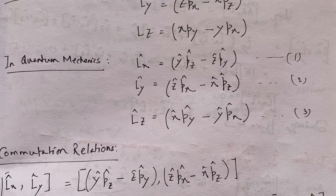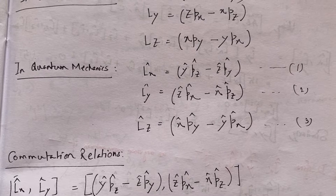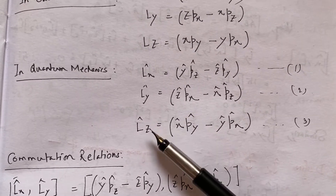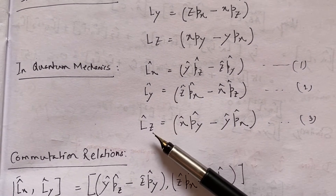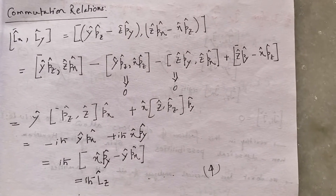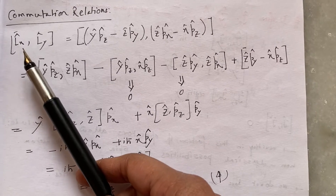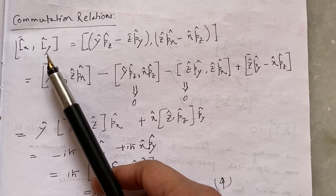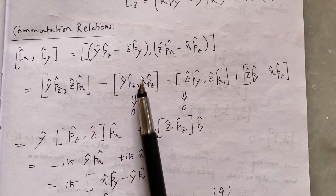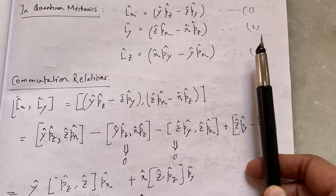In quantum mechanics, because of the uncertainty principle, we cannot evaluate LX and LY simultaneously, LY and LZ simultaneously, or LX and LZ simultaneously. Let me prove this commutation relation of LX and LY. If LX and LY commute, then this commutation relation must be equal to 0. So I have written the expressions of LX and LY from equations 1 and 2.